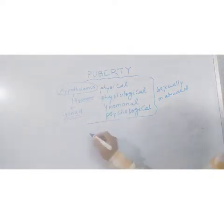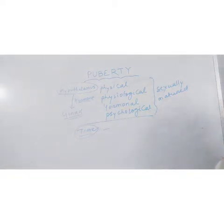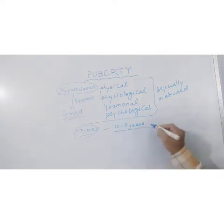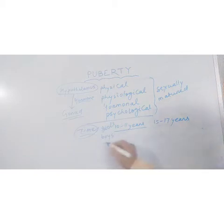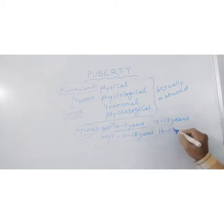Coming to the time period of puberty — what is the real time of puberty? It is found that in case of girls, puberty appears at the age of 10 to 11 years and the process becomes completed between 15 to 17. In case of boys, it is slightly delayed; it starts at the age of 11 to 12 years and continues up to 16 to 17 years.